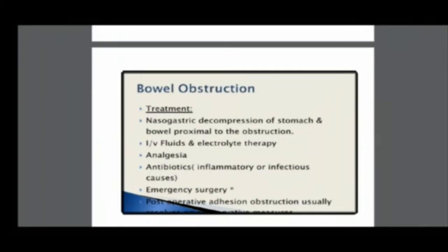Blood tests are also done to find the level of electrolytes and complete blood count. For treatment, first we have to put a nasogastric tube, which can be used for aspiration of gastric contents. Then, to maintain fluids and electrolytes, fluid and electrolyte therapy is given.